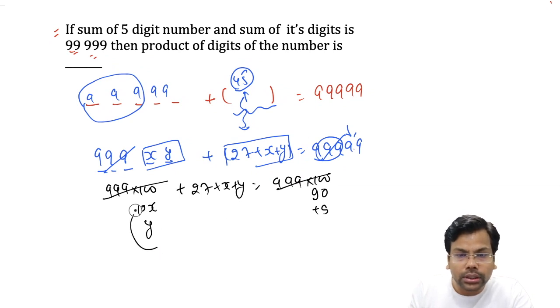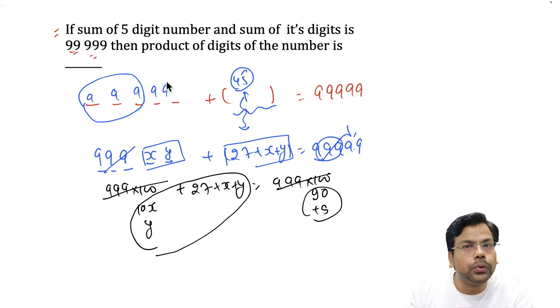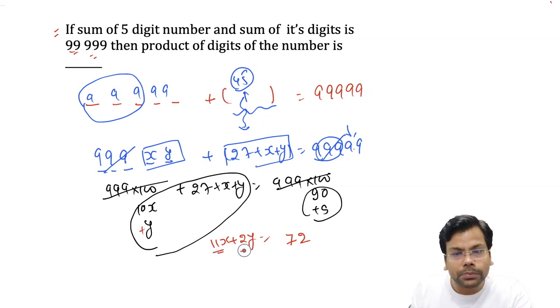If you have two sides, it will cancel out. What we need to work on? The summation of this part is 99. So we need to create equation 10x plus y plus x plus y, which is 11x plus 2y. We know that this one is 99 minus 27 is 72.